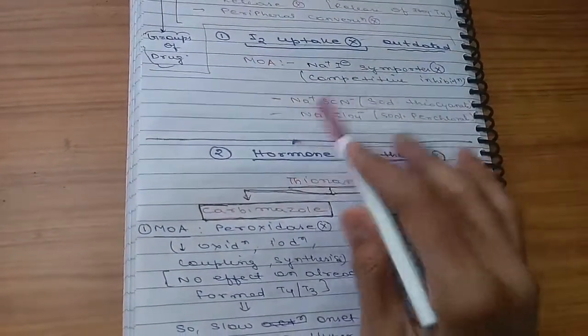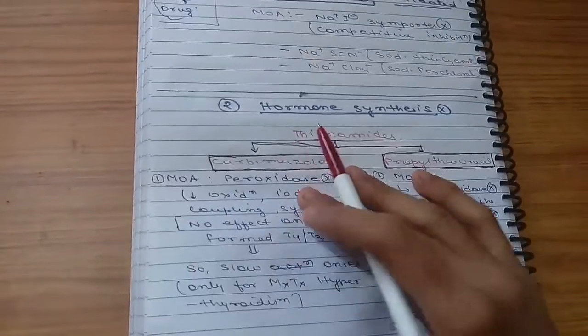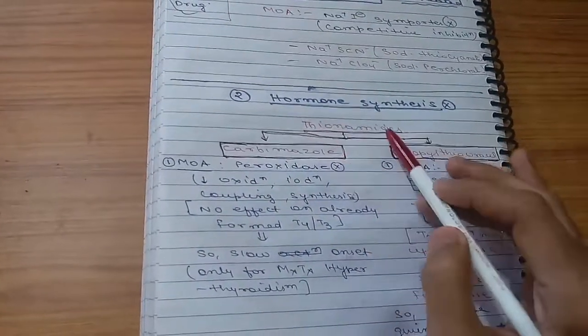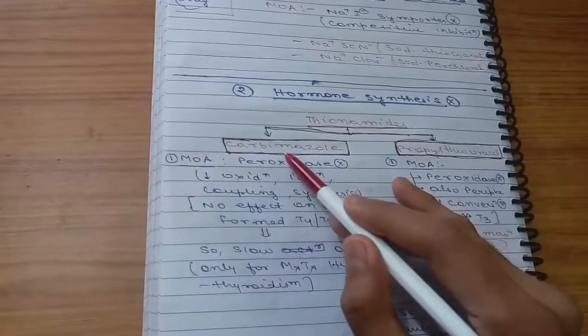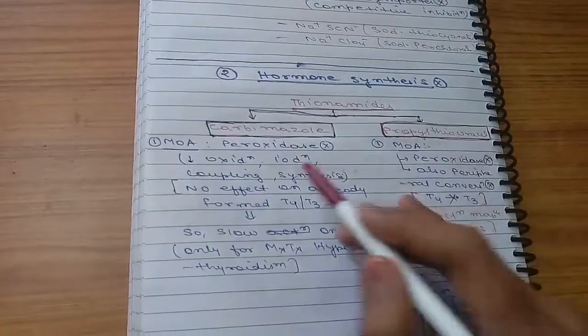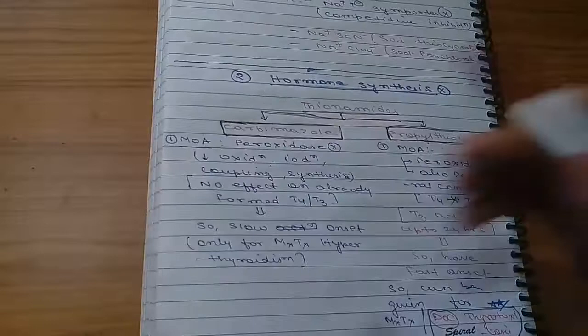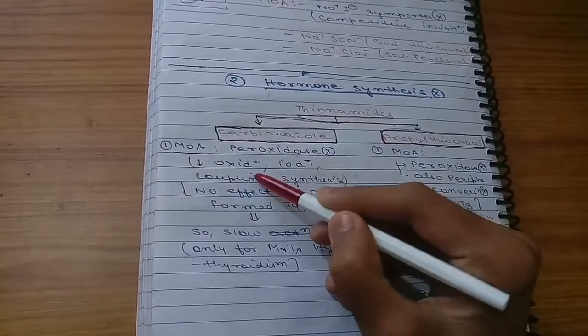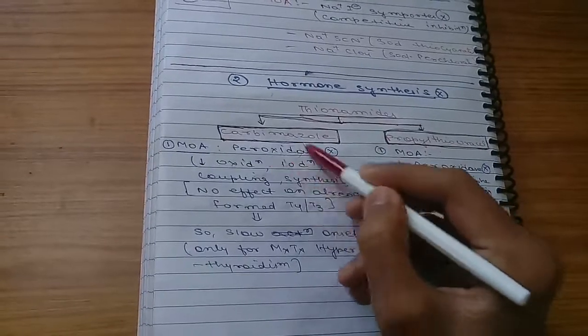Now coming to the hormone synthesis inhibitors, the drug group is thionamides. It includes carbimazole and propylthiouracil. Peroxidase is the main enzyme which is taking part in T3 synthesis, oxidation, and iodination at each step.